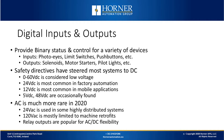Over the years, safety directives have steered most systems to DC voltages. Zero to 60 volts DC is considered low voltage and is considered the safest. The most common voltage used in factory automation is 24 volts DC. 12 volts is the most common in mobile applications. AC is much rarer nowadays from the standpoint of control voltages. 24 volt AC is used in some highly distributed systems, and 120 volts AC is mostly limited to machine retrofits. Relay outputs are very popular today because you can drive either AC loads or DC loads with those particular devices.